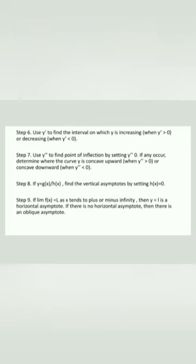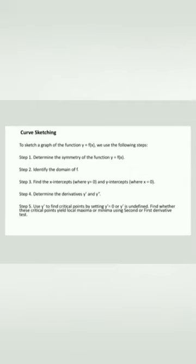Step 8: determine the vertical asymptotes. For a rational function y = g(x)/h(x), set the denominator h(x) = 0. Step 9: check if the limit of f(x) as x → ±∞ equals L; if so, y = L is a horizontal asymptote. If there is no horizontal asymptote, check for an oblique asymptote.